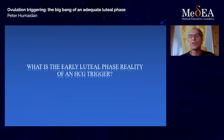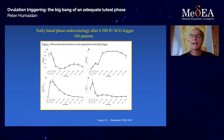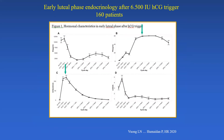What is the early luteal phase reality of an HCG trigger? This is new data from this year from Professor Vuong of Vietnam, looking at the early luteal phase profile of more than 160 patients who had the standard gold trigger of 6,500 IU. HCG peaks around 12 hours after the trigger at around 130 IU. Progesterone peaks around oocyte retrieval plus 2 days. On oocyte retrieval plus 6 days, there's no HCG around any longer, and progesterone has already started declining — this is prior to implantation.